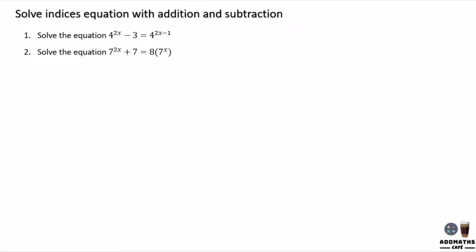Today we are going to learn the Form 4 Chapter 5 subtopic of solving indices equation with addition and subtraction. When you see indices that involve subtraction or addition, the way how you do this question is by letting y equal to something.